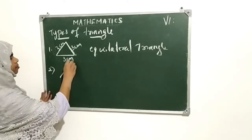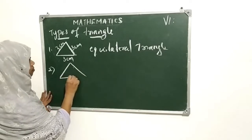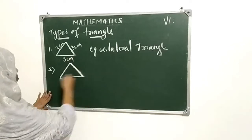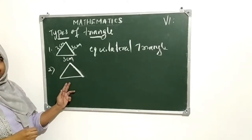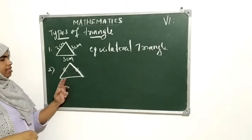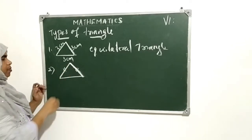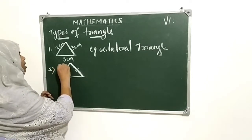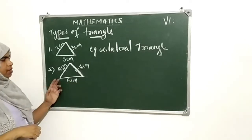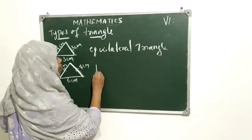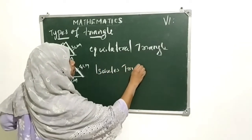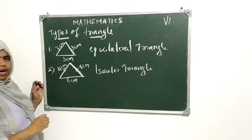Second type: see this triangle. The two sides are equal, but the third side is not equal. Suppose this is four centimeters, this four centimeters, and this is six centimeters. This type of triangle is called an isosceles triangle.